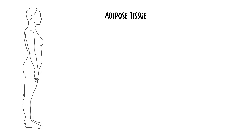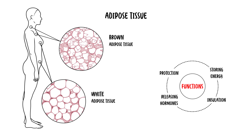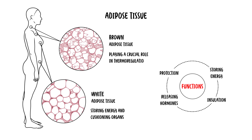Next is adipose tissue, a specialized connective tissue — essentially, it is body fat. It's specialized in storing energy in the form of lipids. Beyond energy storage, adipose tissue also provides insulation, protection, and serves as an endocrine organ, releasing hormones that regulate metabolism. There are two types: white adipose tissue, the most abundant, storing energy and cushioning organs, and brown adipose tissue, which is rich in mitochondria and specializes in generating heat, playing a crucial role in thermoregulation, especially in infants.